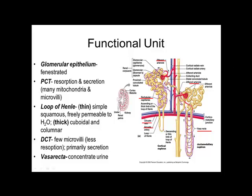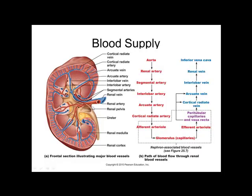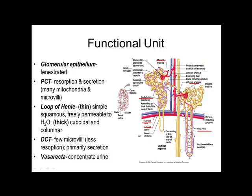Let's recap blood flow: arcuate artery → cortical radiate artery → afferent arteriole. Here's my arcuate, here are my cortical radiates, and off those come the afferent arterioles. The glomerulus strains plasma out but keeps red blood cells in. Bowman's capsule collects the plasma and carries it into the nephron. The first part of the nephron is the renal corpuscle — that is the glomerulus plus the glomerular capsule together.